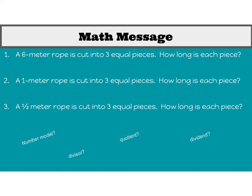Let's take a look. Number one: you should have written a number model of six divided by three equals two meters. Thinking about labels — the quotient is your answer every single time, so two meters is the quotient. The divisor is what you're dividing by, so your divisor is three. Your dividend is six. This is another way to write that: when we have it written with the division symbol, the number on the inside comes first, so it would be six divided by three.